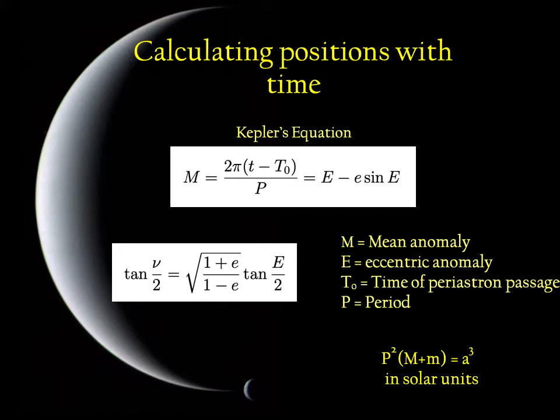So zero mean anomaly or 2 pi or 4 pi, that's peri, and pi or 3 pi or 5 pi, that's apastron when they're farthest apart. But in between, it doesn't correspond exactly to the true anomaly because it's moving uniformly and the true anomaly is not.